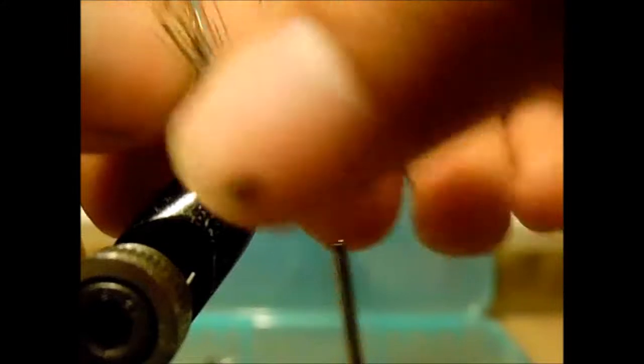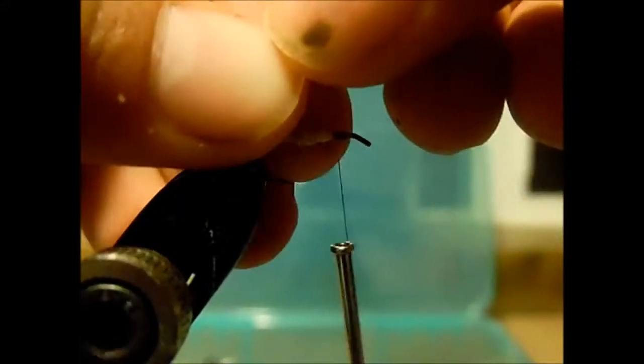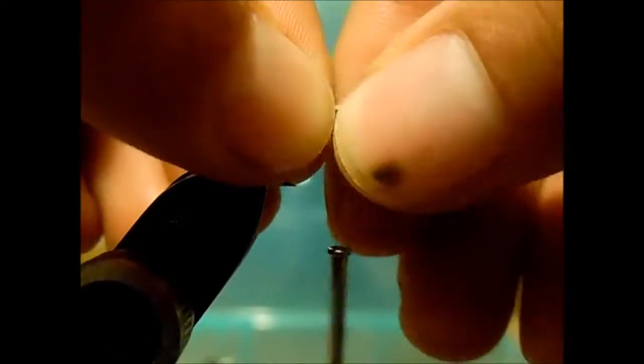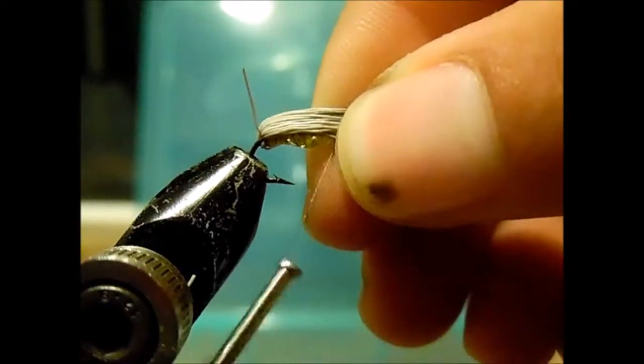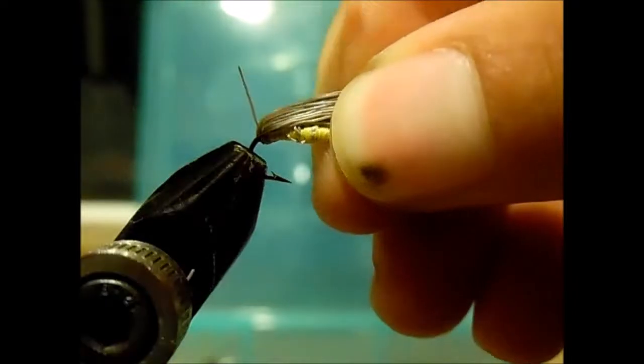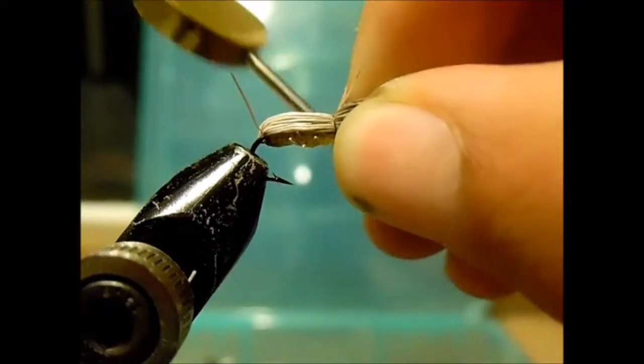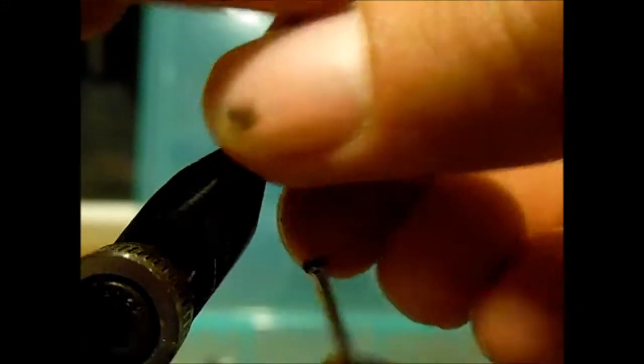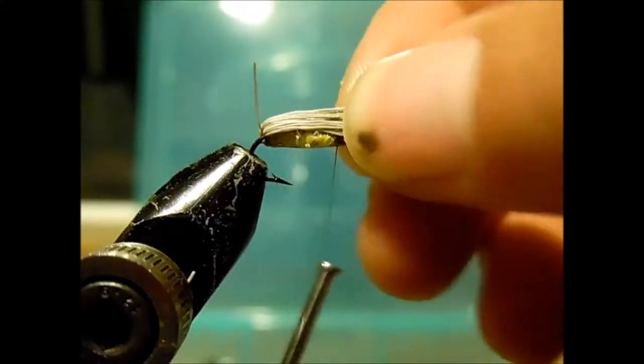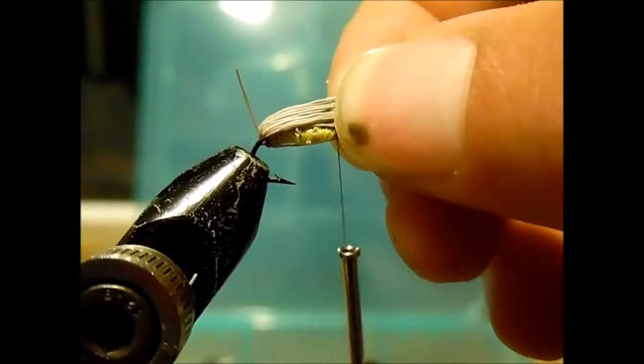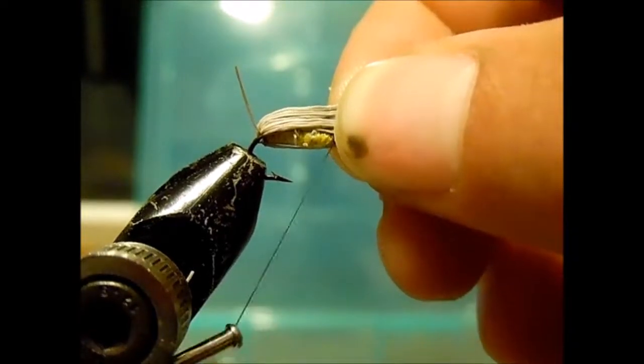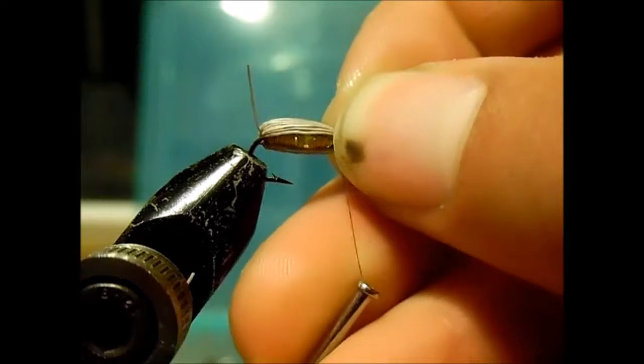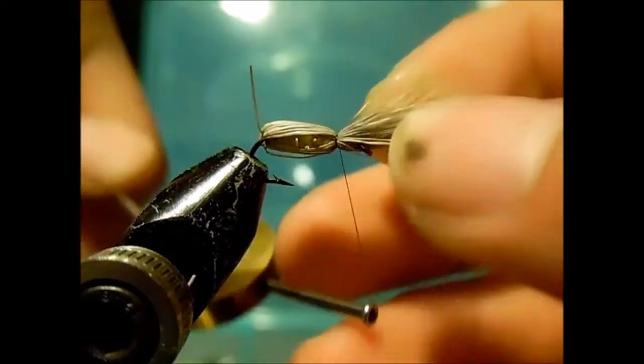Now I'm going to take the deer hair, get it all into a clump and I will pull it forward. This is the tricky part because you don't want to snip any of it off, but we'll pull it forward over top of the hook and then we will, once we get it where we need it, we will wrap over that and tie it down securely. And the hook I'm using is a size 12 if anybody is wondering.